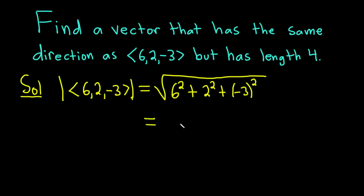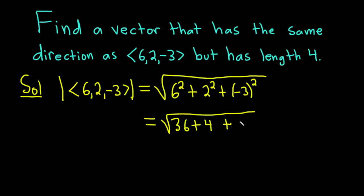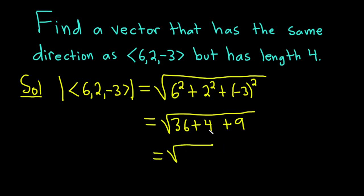This is equal to the square root of: 6 squared is 36, 2 squared is 4, and negative 3 squared is 9. This is equal to the square root of 36 plus 4 plus 9. 36 plus 4 is 40, and 40 plus 9 is 49. So that's equal to 7. Our magnitude is 7 — that's the length of this vector.